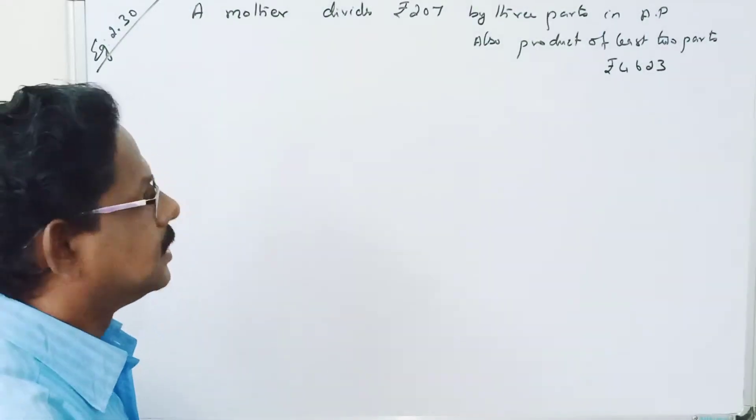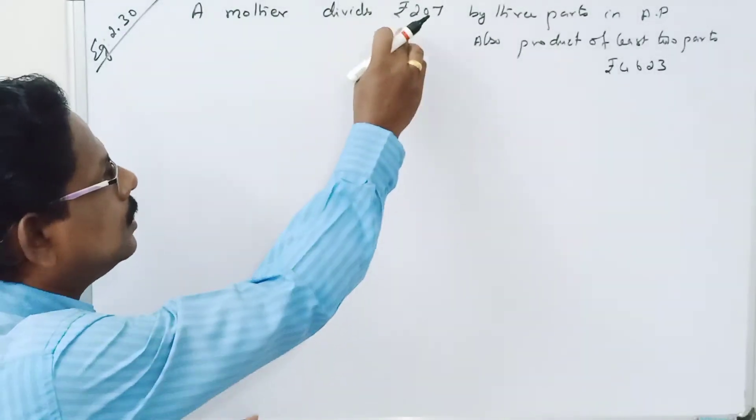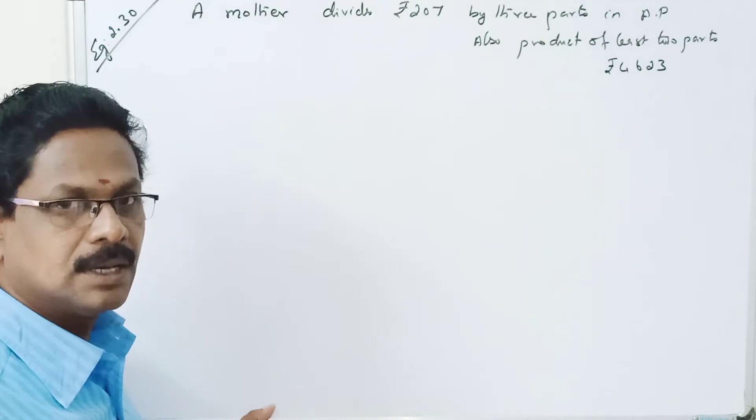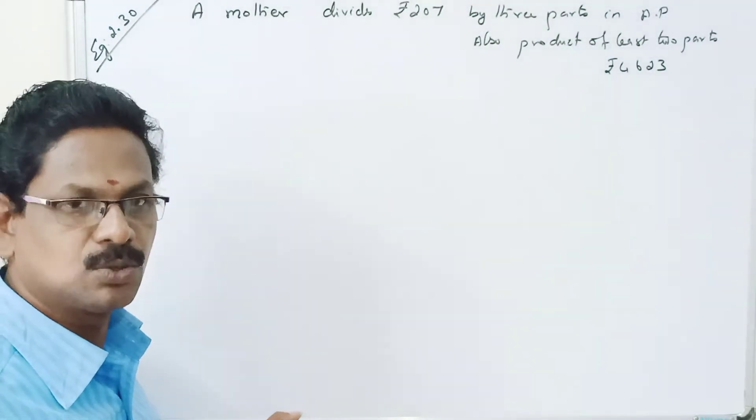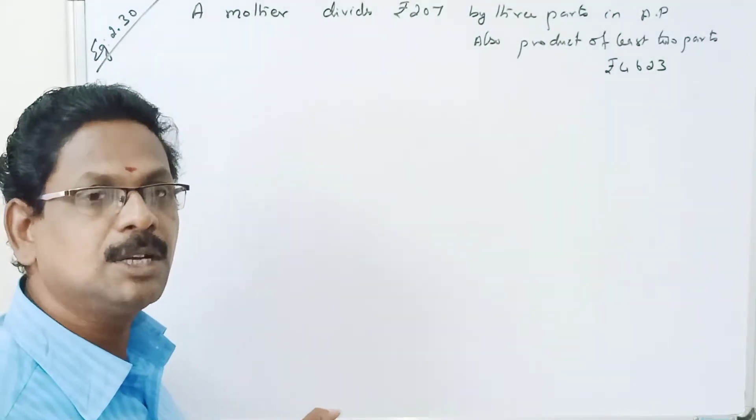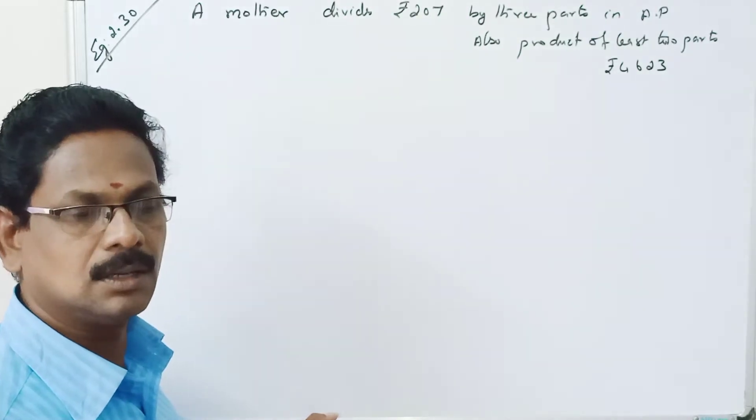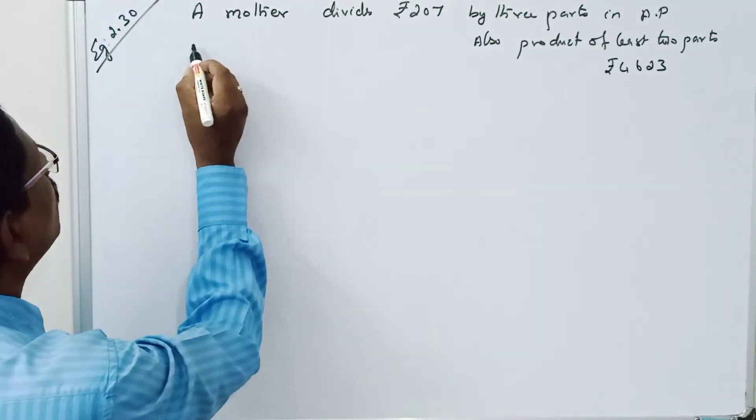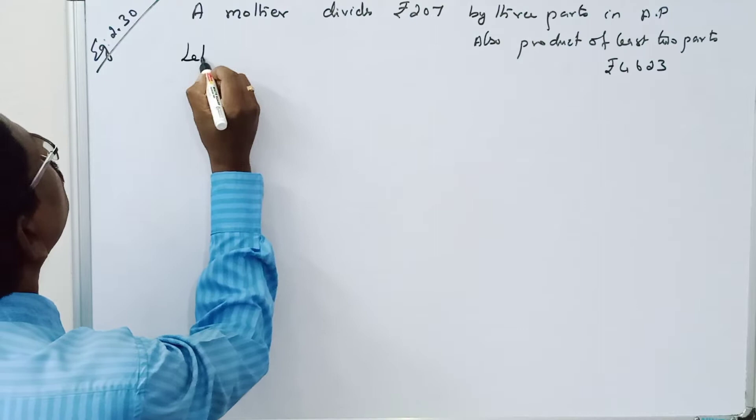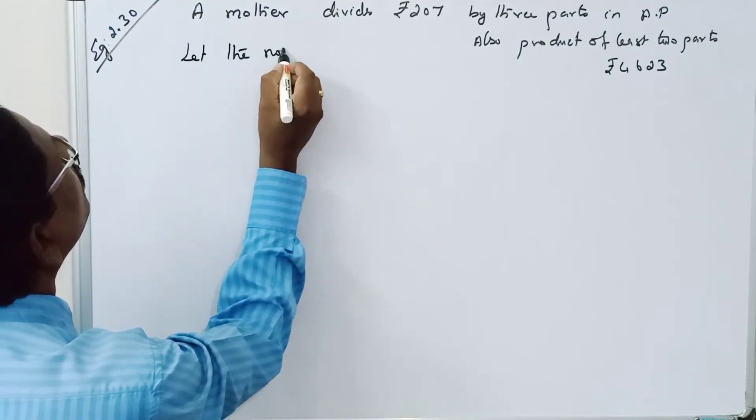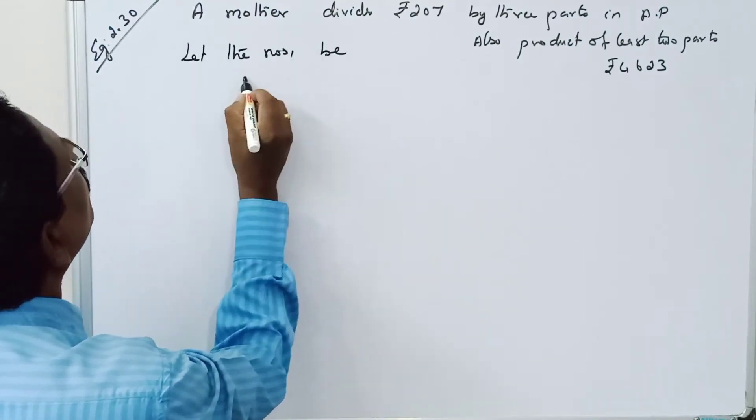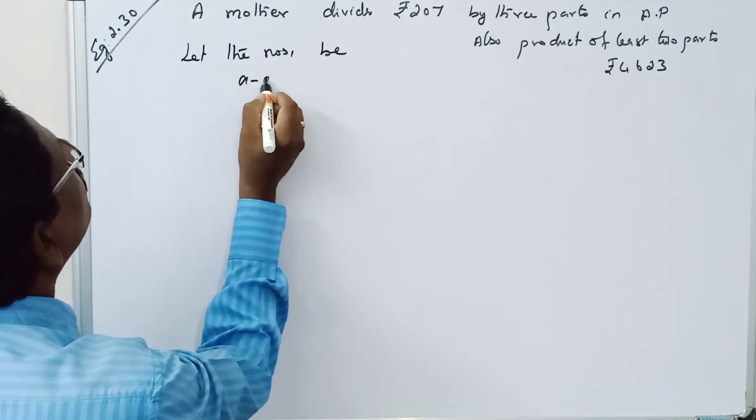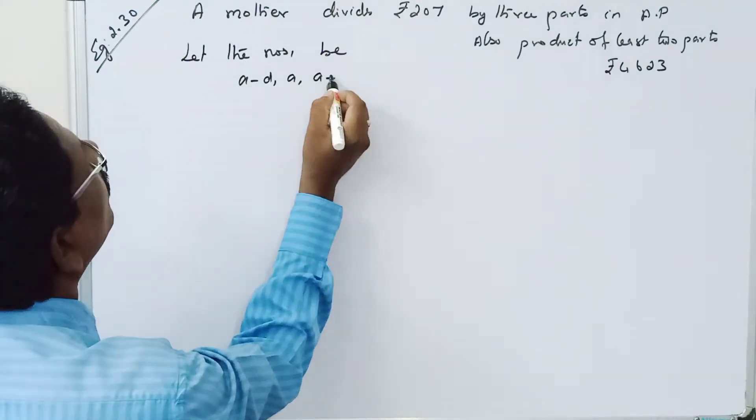Welcome. Problem 207. Let the numbers be a minus d, a, and a plus d.